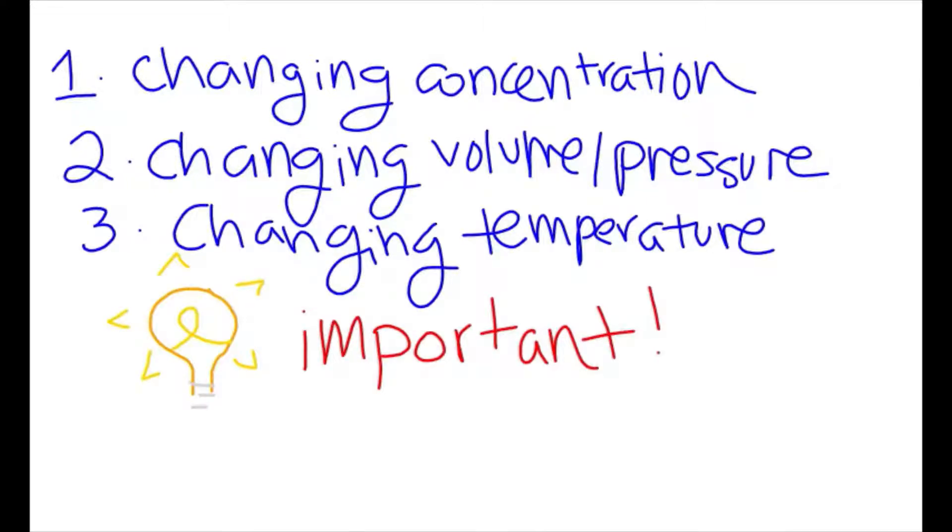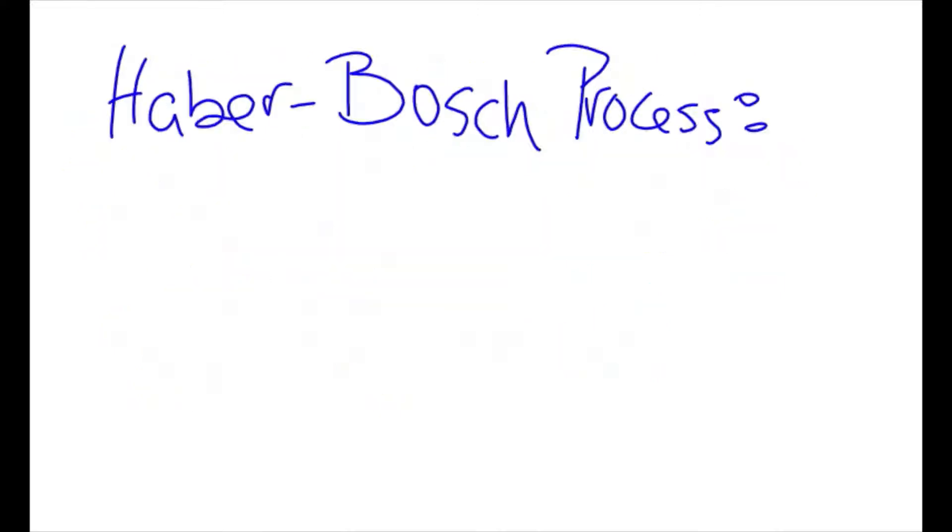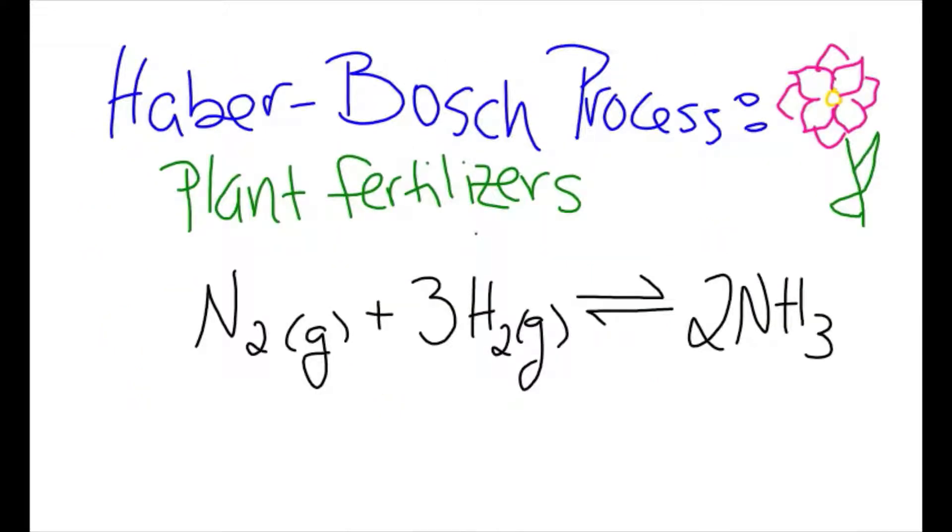These shifts in equilibrium are important to know, not only to solve chemistry problems, but also for processes that affect our daily lives. The Haber-Bosch process is such an example. This process allowed for the mass production of plant fertilizers through ammonia production, as represented by this chemical formula.